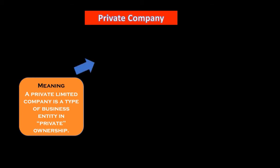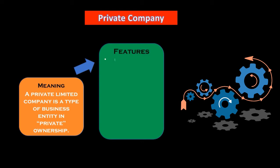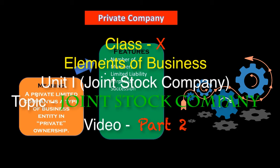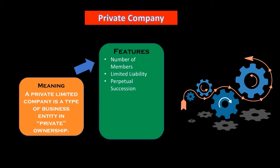Let's check out the characteristics and features — both are the same term. Number of members in a private company is limited, whereas in a joint stock company it is unlimited. Liability is also limited to the extent of how much you invest. Perpetual succession means if one shareholder dies, his or her successor — son or daughter — may take over.